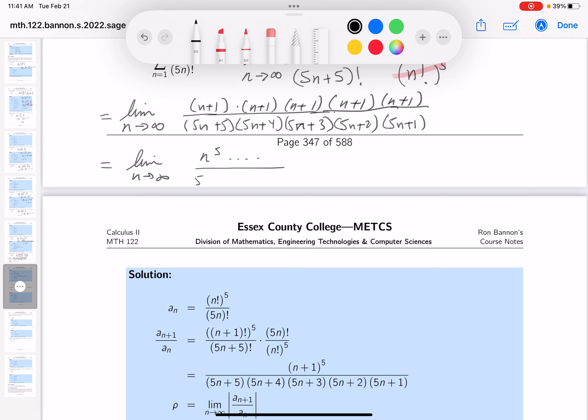But on bottom, you get 5^5 times n^5, plus a bunch of terms. I hope you realize if you divide through by the highest degree variable, which would be n^5, you get 1 over 5^5.